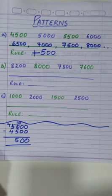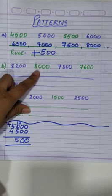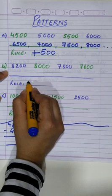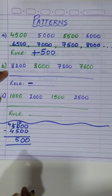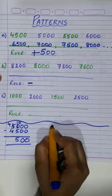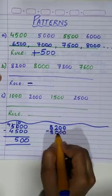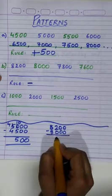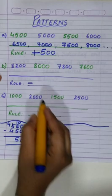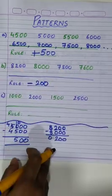Now let's move to the second one. Here the second number is smaller than the first number, so we are going to use the subtraction rule. What is the difference? To find out, we will subtract 8,000 from 8,200, and the difference is 200. So our rule is: subtract 200. Check.